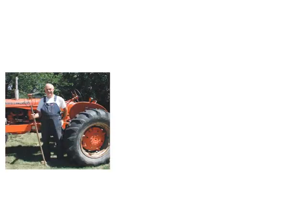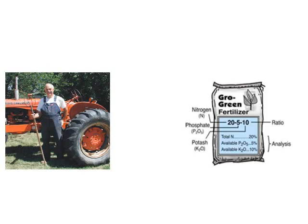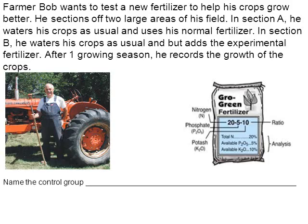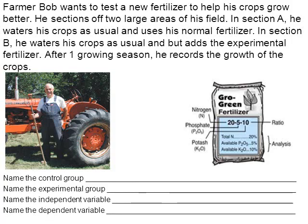Here's another example. This farmer is going to be testing his fertilizer. Farmer Bob wants to test a new fertilizer to help his crops grow better. He sections off two large areas of his field. In section A, he waters his crops as usual and uses his normal fertilizer. In section B, he waters his crops as usual and adds an experimental fertilizer. After one growing season, he records the growth of the crops. Pause the video and try to answer the four questions.